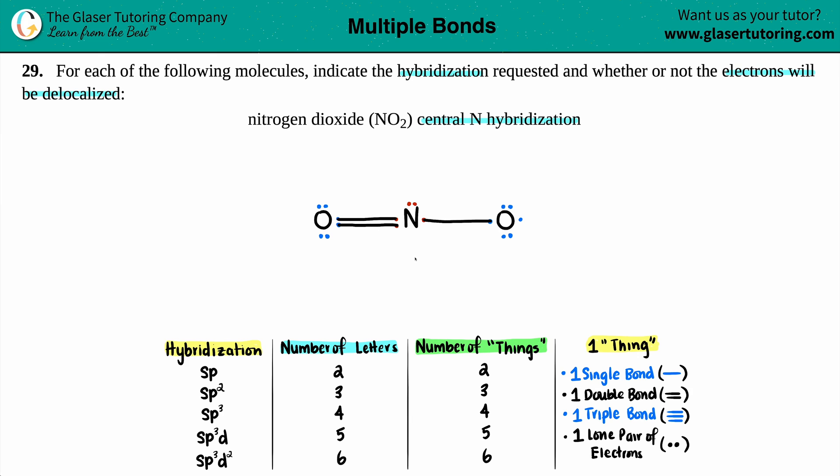Now all we have to do is find out the hybridization of the central nitrogen. There are five different types of hybridizations ranging from sp all the way down to sp3d2. These are the types of orbitals that are overlapping to form the bonds, especially the sigma bonds. The hybridization is linked up with how many letters are in the hybridization name. For example, sp3 has one s and three p letters, that's a total of four letters. If we strip away one p that becomes sp2 and that's three total letters.